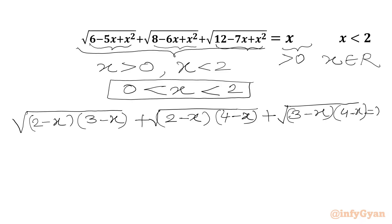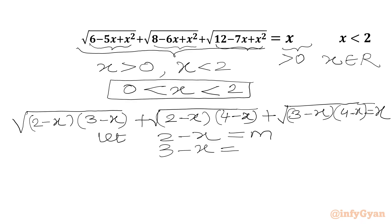The RHS is x. Now we can use substitution. Let 2 − x equal m. So I can write 3 − x in terms of m: its value will be m + 1, and 4 − x will be m + 2.